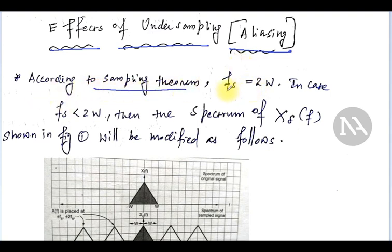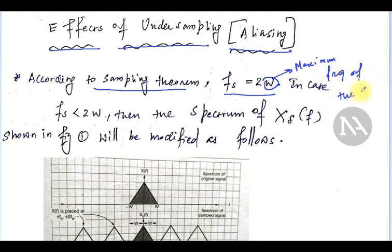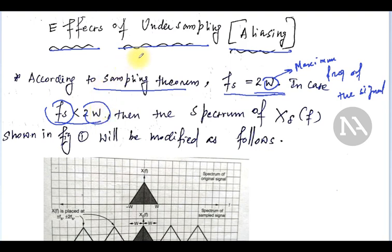Now we will continue. What is the effect of under-sampling? According to the sampling theorem, the sampling frequency should be twice W, where W is the maximum frequency of the signal we are going to sample. If this condition is not satisfied — that is, if the sampling frequency is less than 2W — then that effect is called aliasing, and this is called under-sampling.